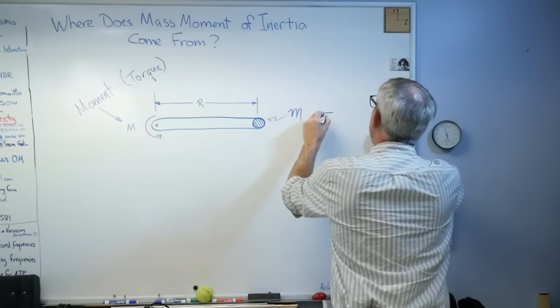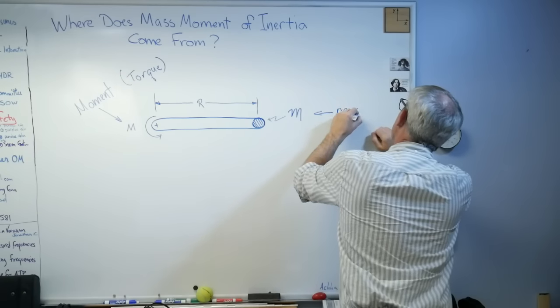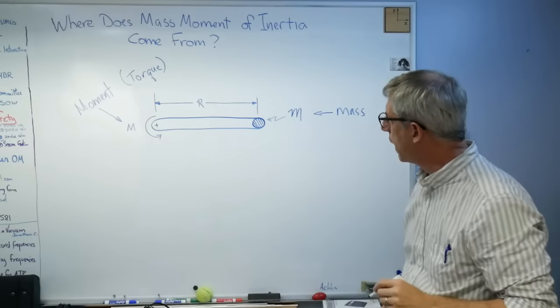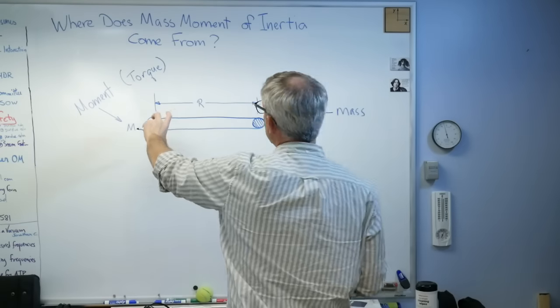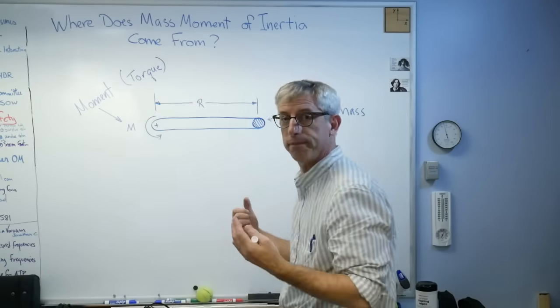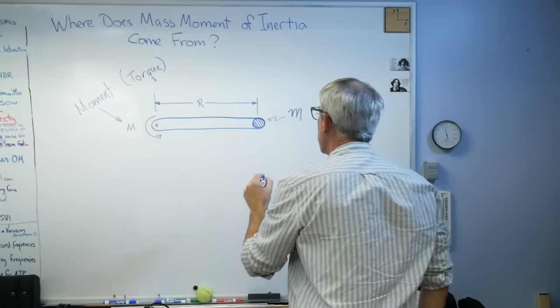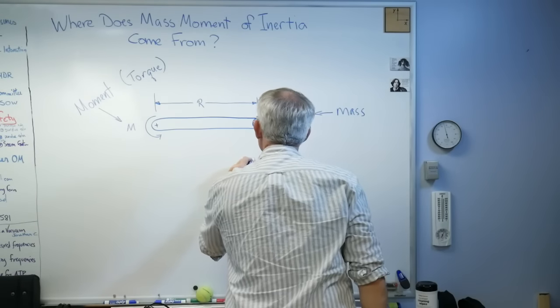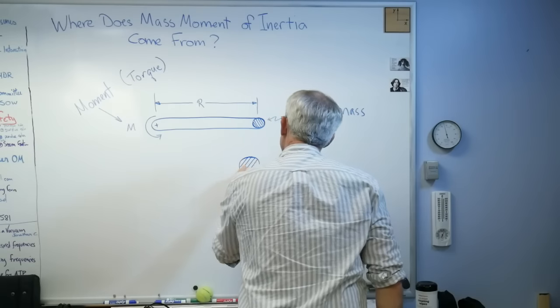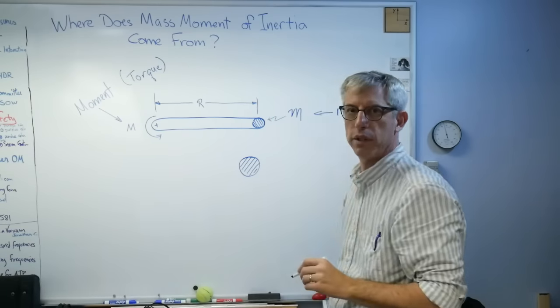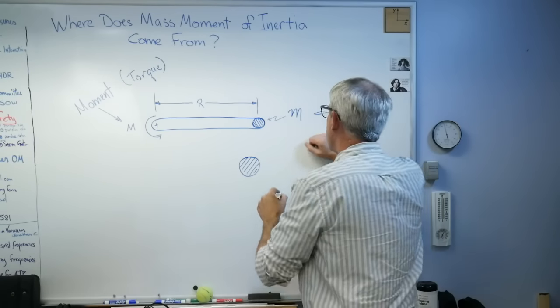I'm going to apply a moment to this bar, it's going to spin around. Easy enough. Well, let's look at what's going on with just the mass. This little piece of unobtainium, whatever this dense stuff is that we've probably also got from Amazon.